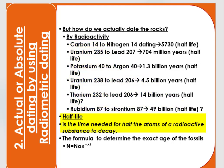Half-life means the time period needed for half of the atoms of a radioactive substance to decay. The half-life for carbon-14 to decay to nitrogen-14 is 5,730 years. The half-life for potassium-40 to decay to argon-40 is 1.3 billion years. The half-life for uranium-238 to decay to lead-206 is 4.5 billion years. The half-life for thorium-232 to decay to lead-206 is 14 billion years, and for rubidium-87 to decay to strontium-87 is 49 billion years.